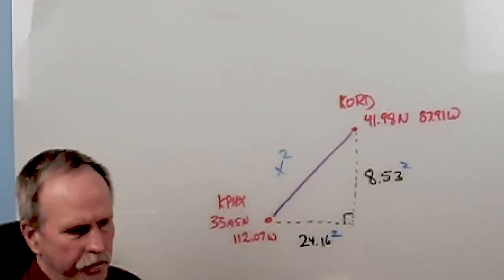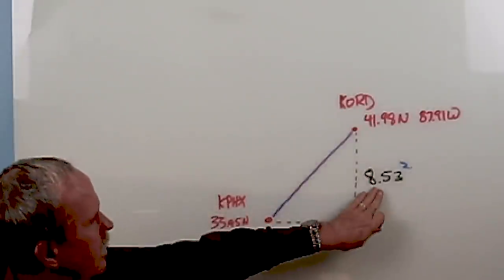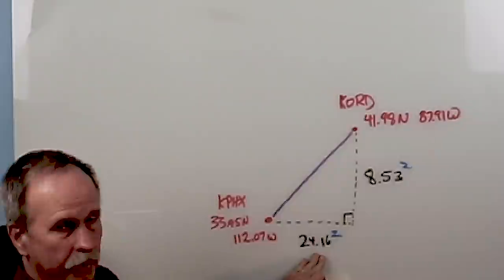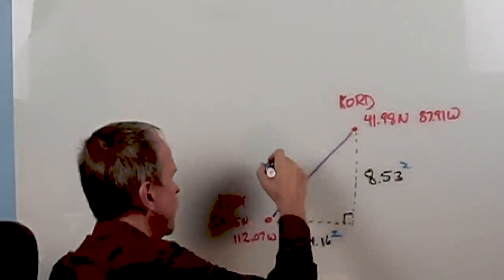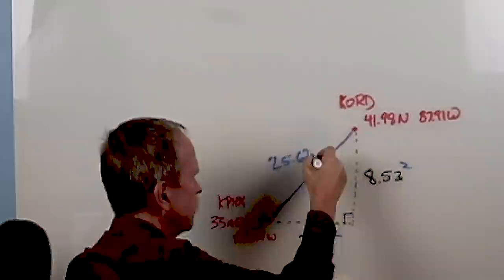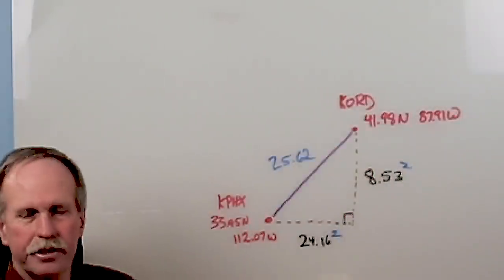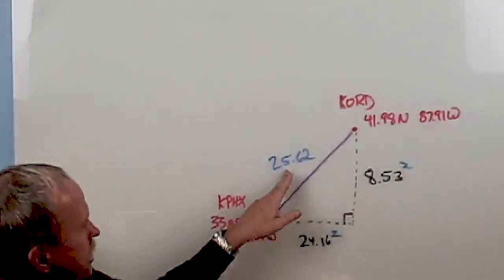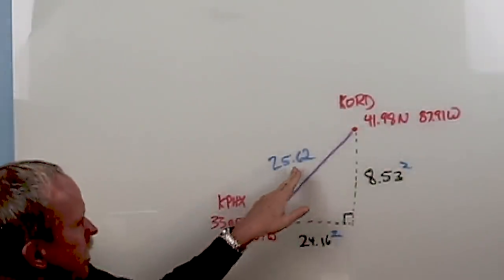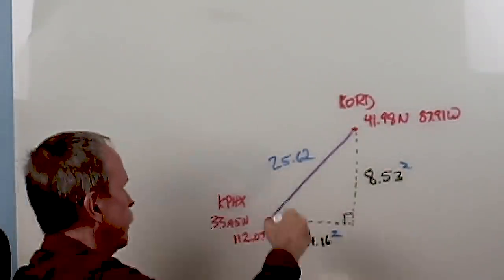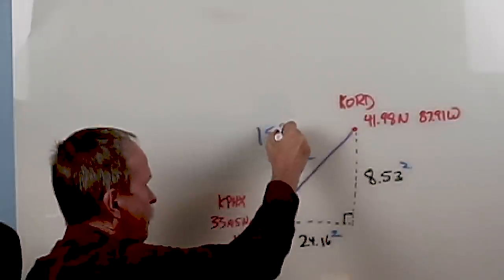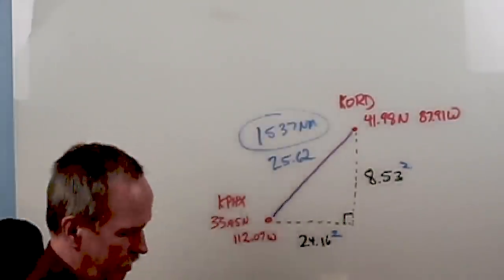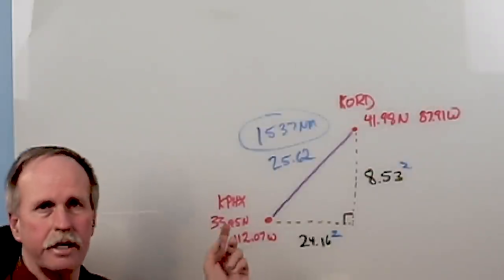Let's go ahead and do that real quick. Now if we square 8.53 and add it to the square of 24.16, we're going to come up with 25.62. Now each degree on the surface of the Earth is 60 nautical miles. So we take 60 and multiply it by 25.62, and we come up with 1537 nautical miles between Chicago and Phoenix.